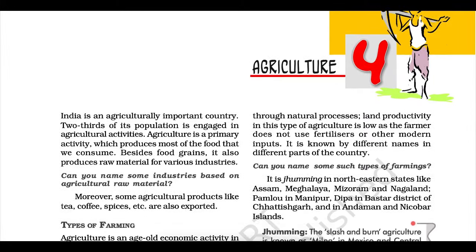Rabi crops are sown in winter from October to December and harvested in summer from April to June. Some of the important Rabi crops are wheat, barley, peas, gram, and mustard. Though these crops are grown in large parts of India, states from the north and northwestern parts such as Punjab, Haryana, Madhya Pradesh, Jammu and Kashmir, Uttarakhand, and Uttar Pradesh are important for production of wheat and other Rabi crops. Availability of precipitation during winter months due to the western temperate cyclones helps in the success of these crops. The success of the Green Revolution in Punjab, Haryana, western Uttar Pradesh, and parts of Rajasthan has also been an important factor in the growth of the above-mentioned Rabi crops.